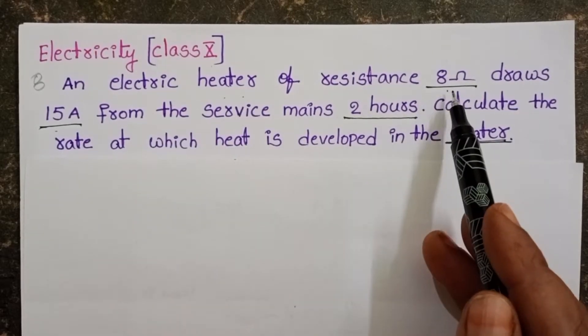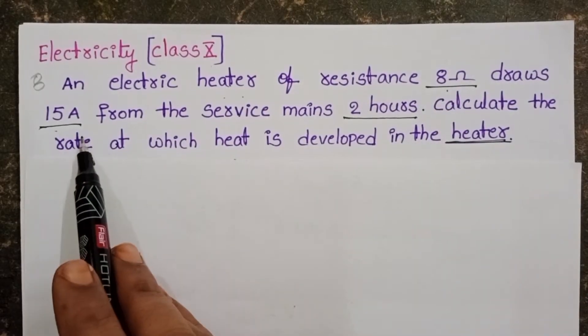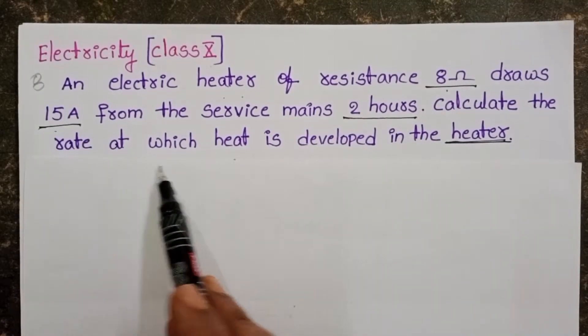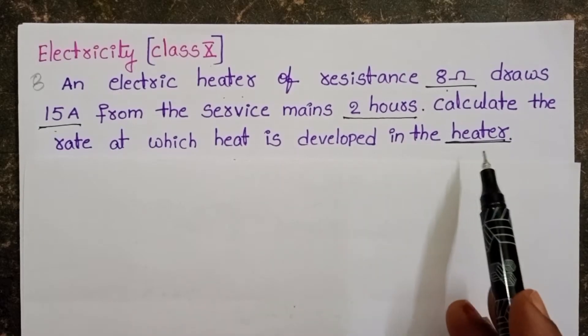An electric heater of resistance 8 ohms draws 15 amperes from the service mains in 2 hours time. Calculate the rate at which heat is developed in the heater.